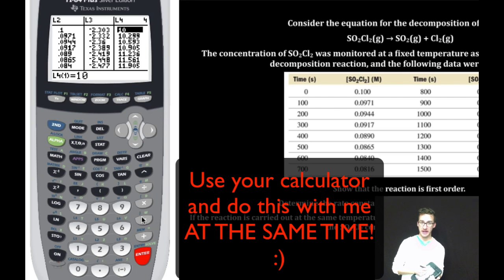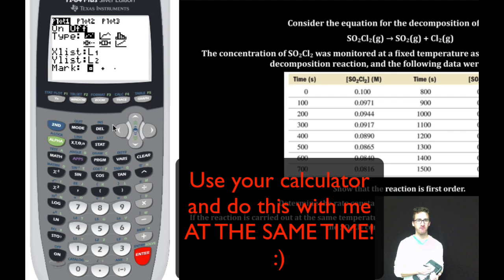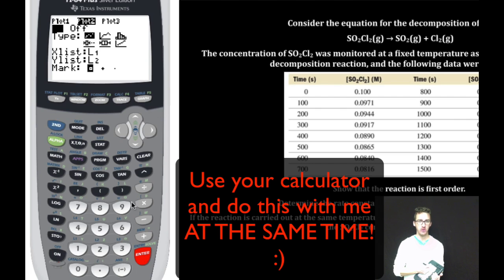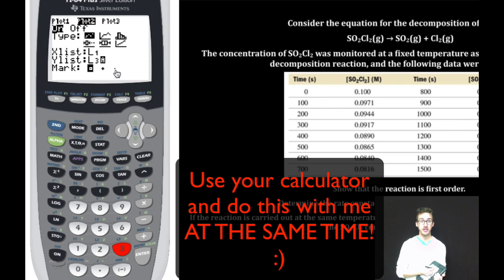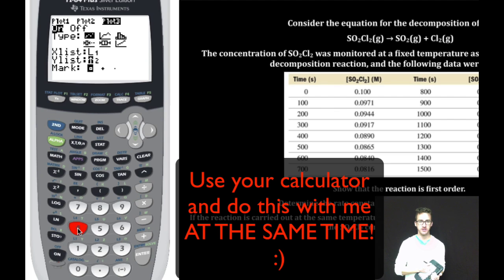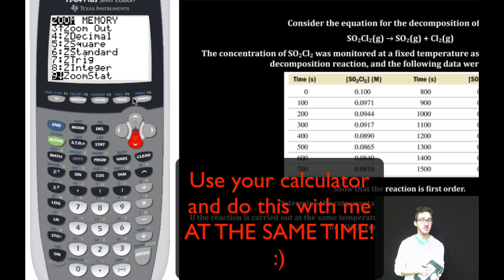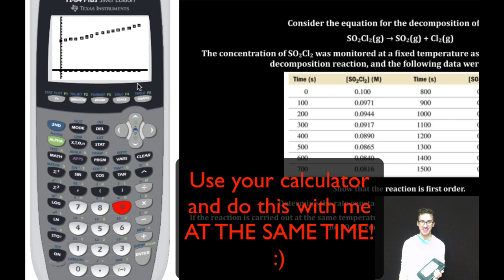This is a graphing calculator, so we can graph it. I'll go to second stat plot, enter. Our first stat plot we're going to turn on with x list L1 and y list L2 — so concentration against time. For stat plot two, we'll keep x list as time but make the y list L3. So now we're plotting the natural log of concentration against time. And stat plot three will compare one over the concentration, or L4 values, against time. Hit graph, then zoom nine for zoom stat.